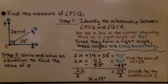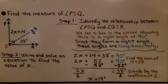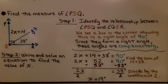Now take a look at this diagram. We can see a little box here — we know that means 90 degrees. We need to find the measure of angle PSQ. First, we identify the relationship between angle PSQ and angle QSR. The box shows a right angle of 90 degrees, and since they form a right angle, these angles are complementary. So now we write and solve an equation to find x.